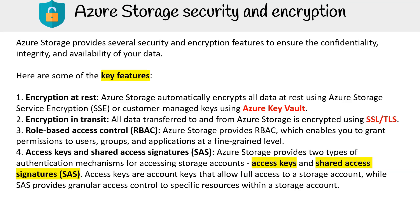Access keys and shared access signatures: Azure Storage provides two types of authentication mechanisms for accessing storage accounts — access keys and shared access signatures. Access keys are account keys that allow full access to a storage account, while SAS provides granular access control to specific resources within a storage account.